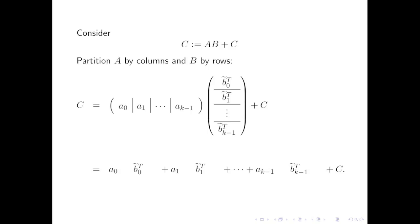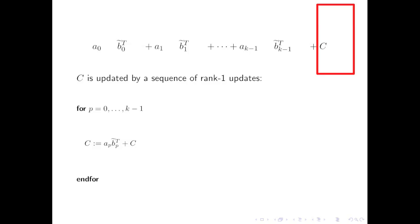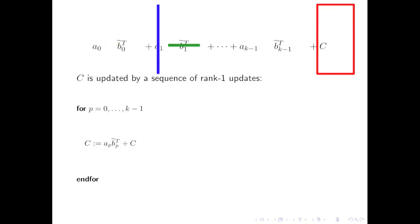It's a matter of doing a dot product with the symbols. With the P loop on the outside, C is updated by a sequence of rank-one updates: the first time through the loop you do an outer product of A₀ (a column) with B₀ transposed (a row), then the second time through you do the same with the second term, and so forth. So it's a sequence of rank-one updates that updates matrix C.